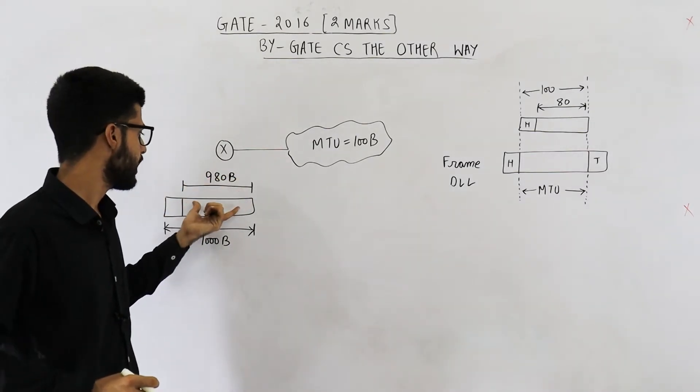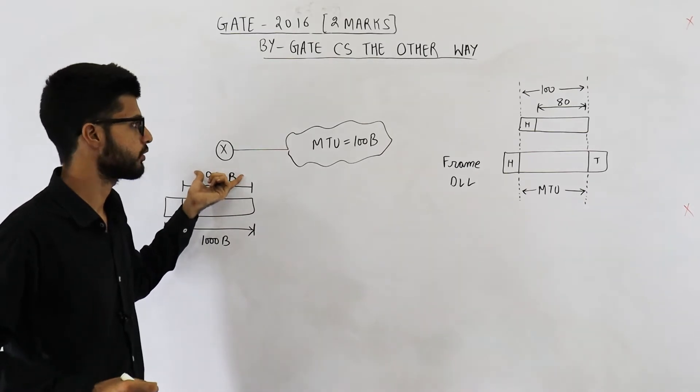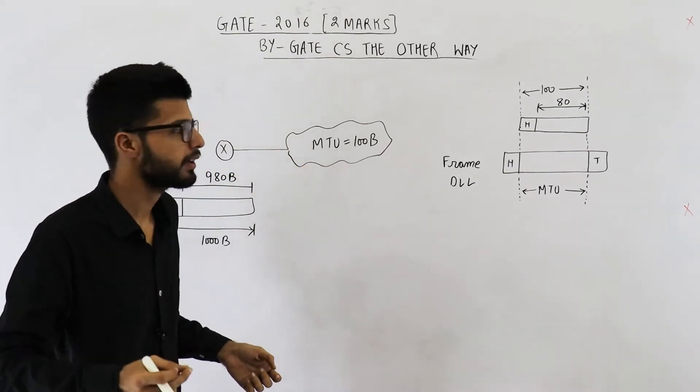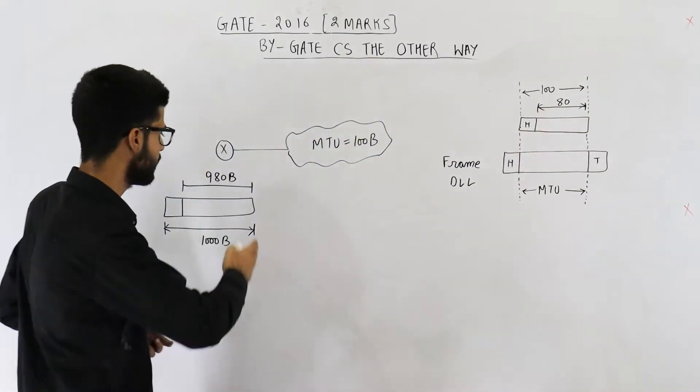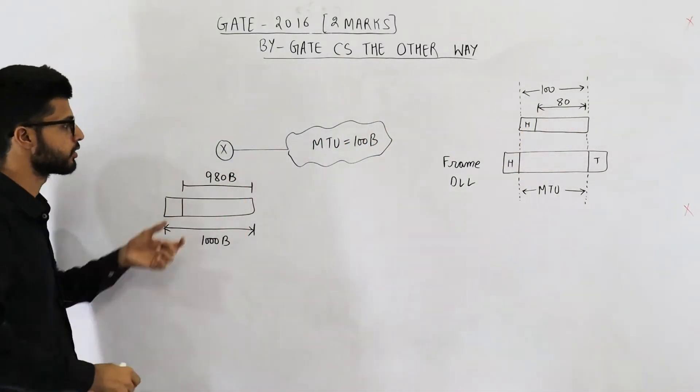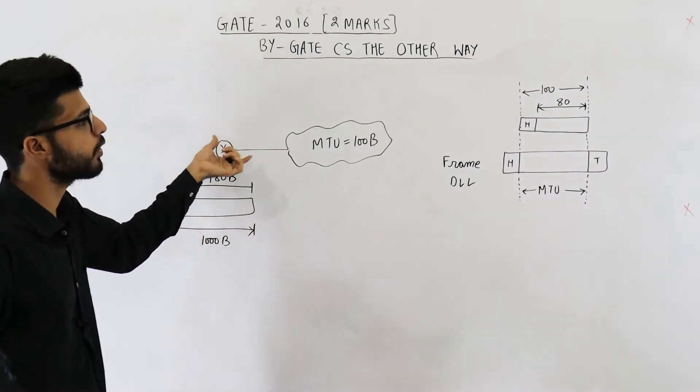Now this datagram has 980 bytes of data. But this network can support packets with maximum 80 bytes of data only. That means this one needs to be fragmented. So this router is aware of this fact.